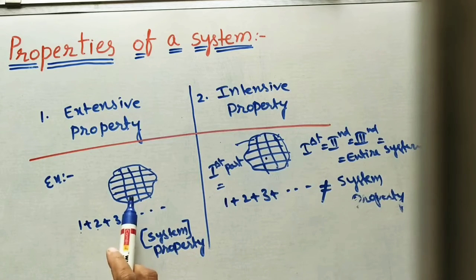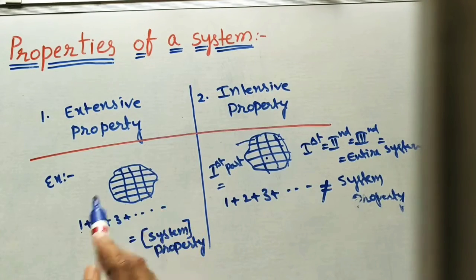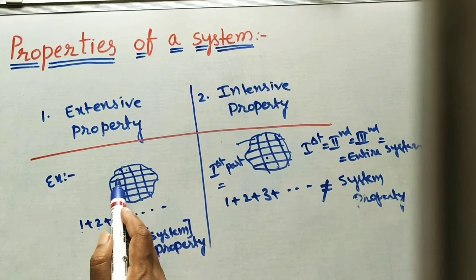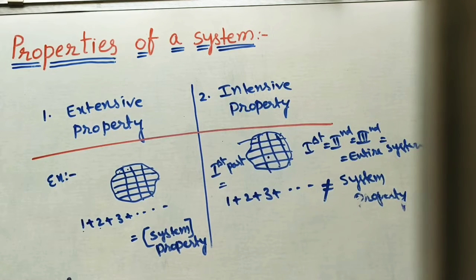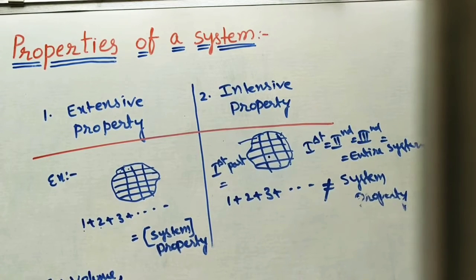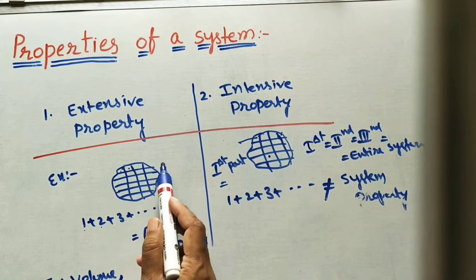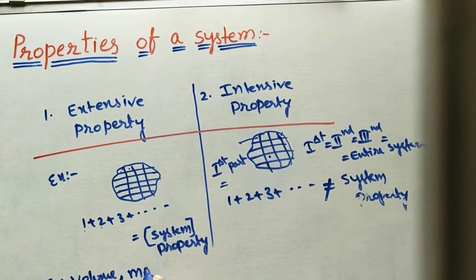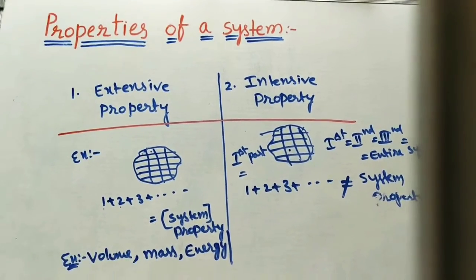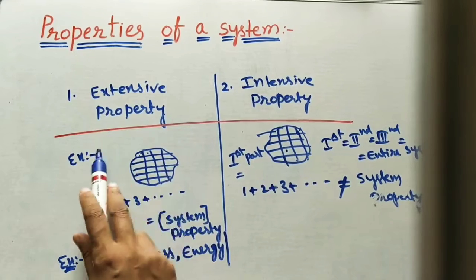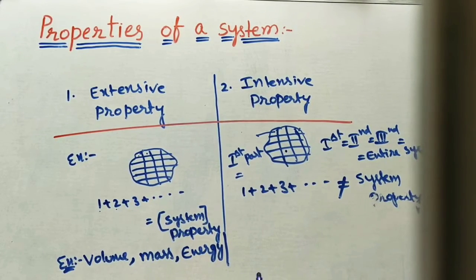Can we take volume as an example? If I am dividing into small volumes — one, two, three — and adding all the volumes, it will give the entire system volume. So volume is an example of extensive property. Mass also — if you are dividing m1, m2, m3, it will give the entire mass. Volume, mass, and energy — we can take these as examples of extensive property.